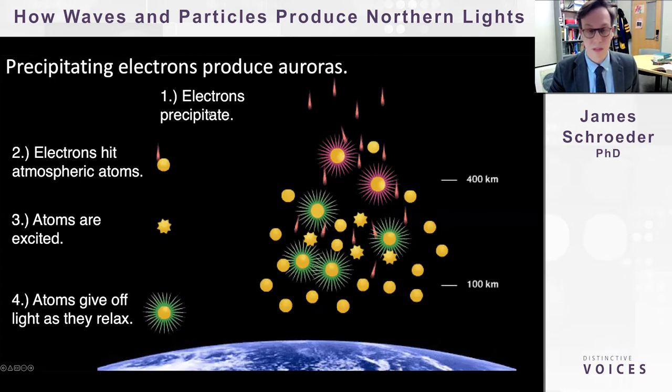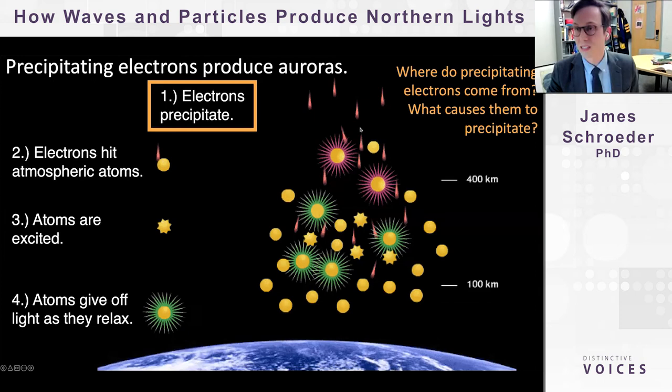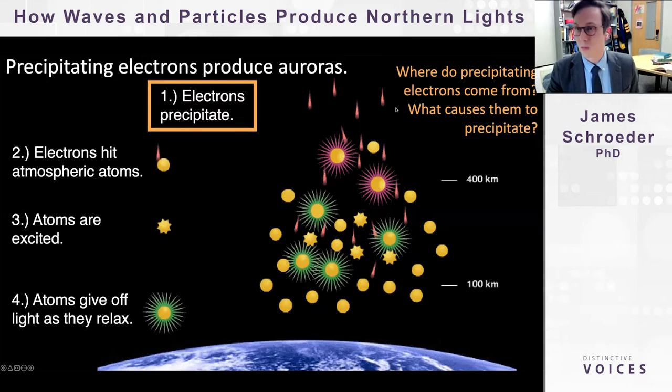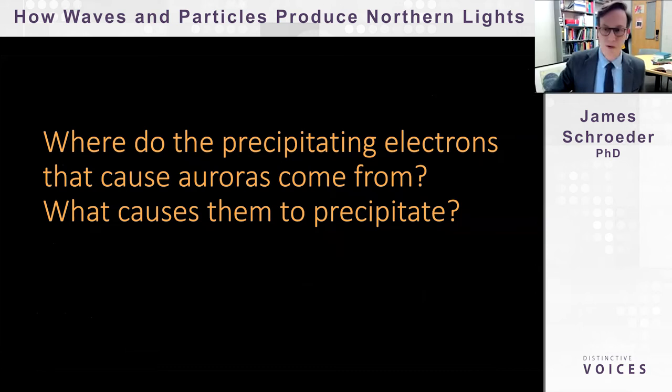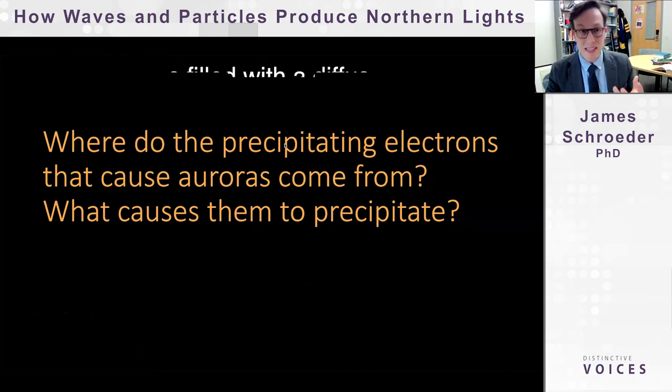A lot of auroral research focuses on what's happening out in space to cause electrons to precipitate. I have two guiding questions for tonight's talk: Where do precipitating electrons come from, and what causes them to precipitate?